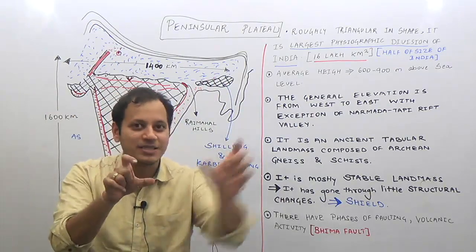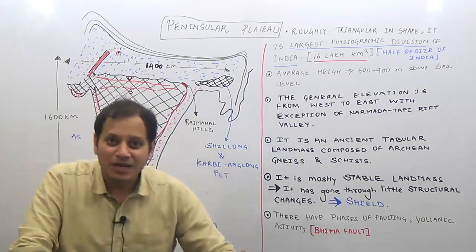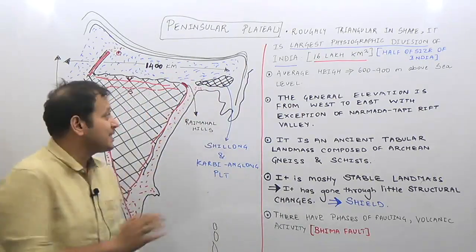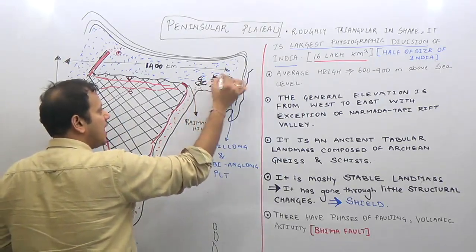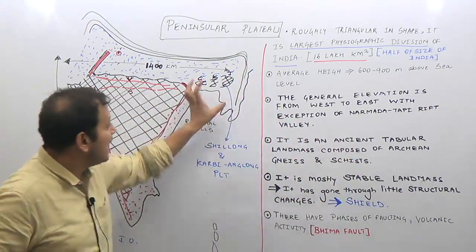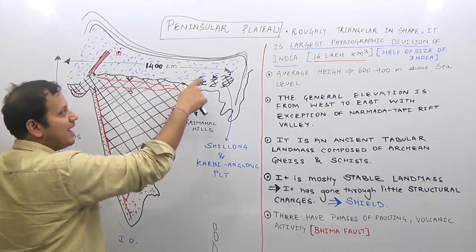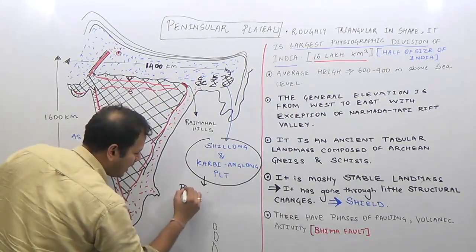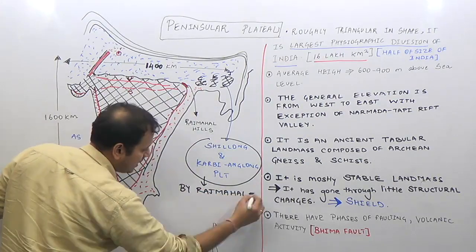The Shillong or Karbi Anglong plateau consists of the Garo, Khasi, and Jaintia hills — which are not part of the Himalayas but are physiographically and geologically part of the peninsular plateau. This Shillong plateau is separated from the main peninsular plateau by the Rajmahal-Garo Gap.